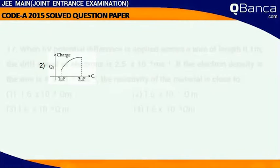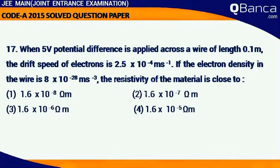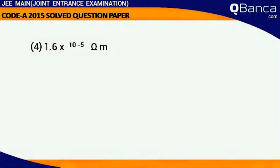When 5V potential difference is applied across a wire of length 0.1 meter, the drift speed of electron is 2.5 into 10 to the power of minus 4 meter per second. If the electron density in the wire is 8 into 10 to the power of minus 28 meter per second cube, the resistivity of the material is close to answer 1.6 into 10 to the power of minus 5 ohm meter.